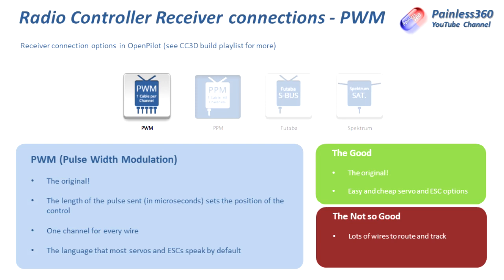The pulse ranges from 1000 microseconds at the low end to 2000 microseconds at the high end. When setting up a flight controller you'll see numbers like 1060, 1500 being the middle channel value, and 1980 being the top value — those refer to the width of that pulse. PWM has been around for a very long time and pretty much everything supports it, so unless you're buying something specifically for SBUS, it'll plug in and work fine.